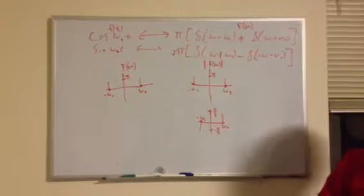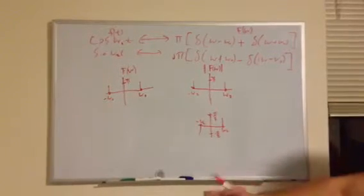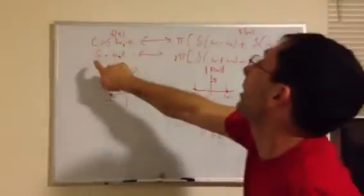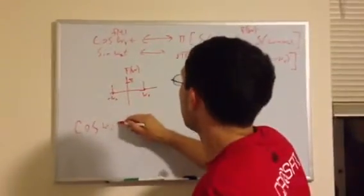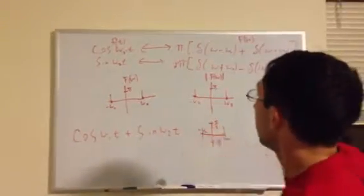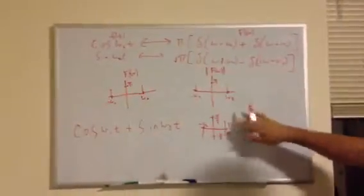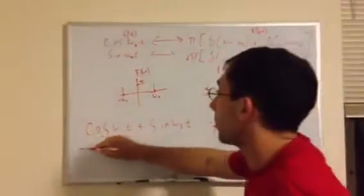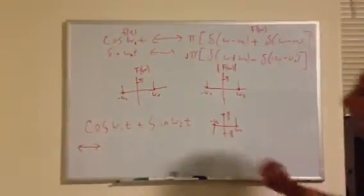So, the Fourier transform, remember, is linear, so that means you just distribute it. So, let's say we wanted to add these two things, cosine omega 1t plus sine omega 2t. And we wanted to transform that, so it's right down here, and we wanted to transform that.